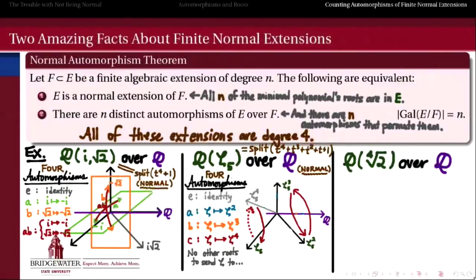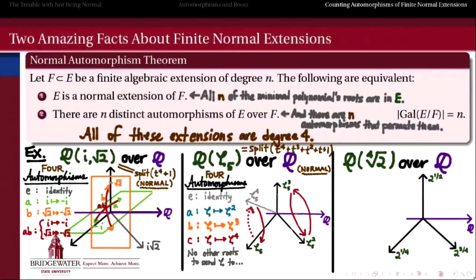Now let's look at the last example: adjoining the real fourth root of 2 to the rationals. Again, this is a degree 4 extension, because we get as a basis 1, the fourth root of 2, the square root of 2, and the fourth root of 8 (i.e., 2^(3/4)).